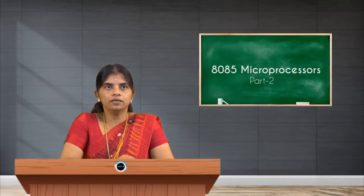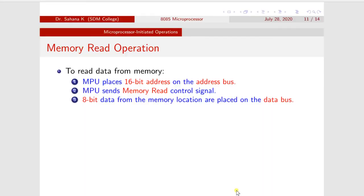The address bus runs from A0 through A15, and the entire address is carried through that address bus. As soon as the address is placed on the address bus, it goes to the memory and activates that memory chip. Once the address is enabled, the next step is to identify which operation is to be done. For this example, that operation is memory read, so the second step is to send the memory read control signal using the control bus.